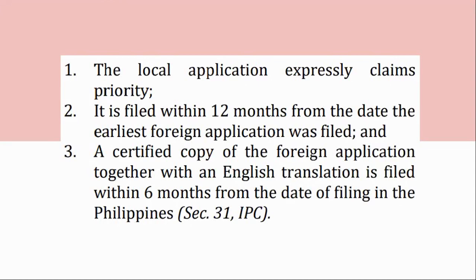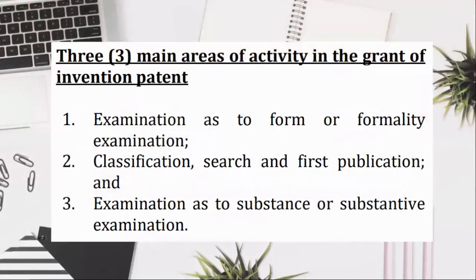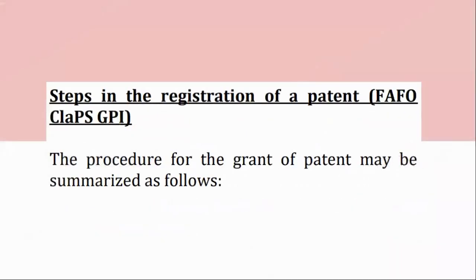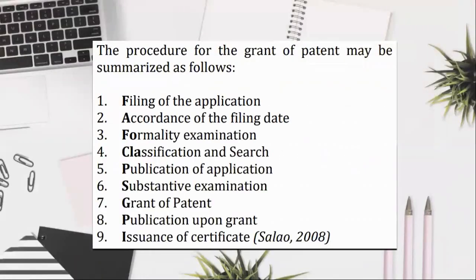Main areas of activity in the grant of an invention patent: (1) examination as to form or formality examination; (2) classification, search, and first publication; (3) examination as to substance or substantive examination. Steps in the registration of a patent: (1) filing of the application; (2) accordance of the filing date; (3) formality examination; (4) classification and search; (5) publication of application; (6) substantive examination; (7) grant of patent; (8) publication upon grant; (9) issuance of certificate.